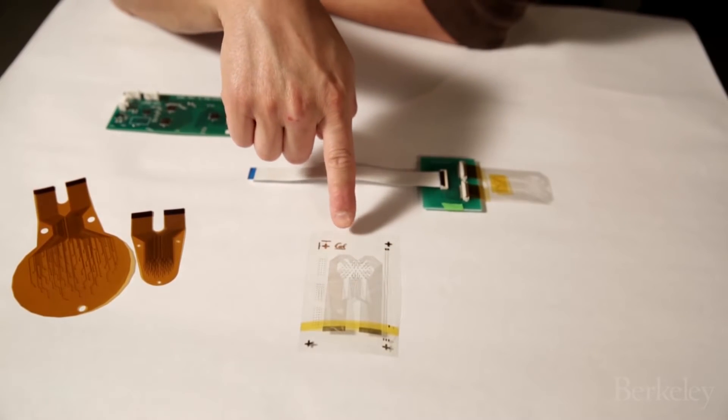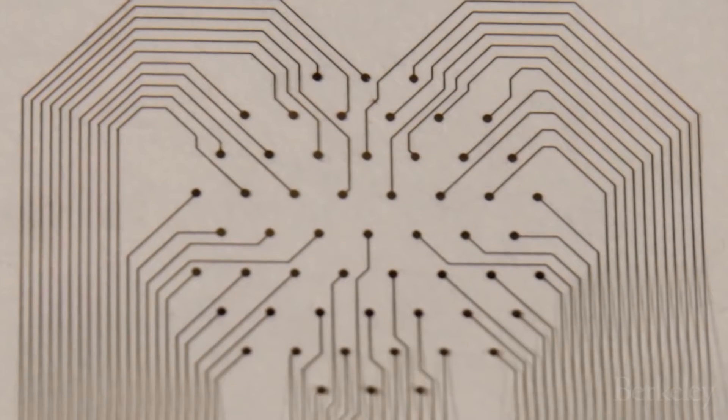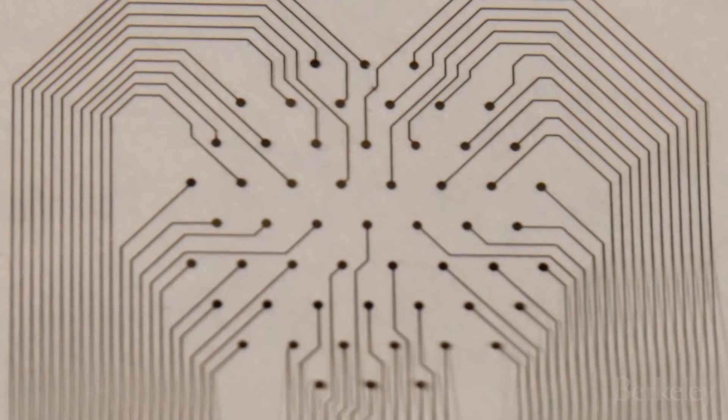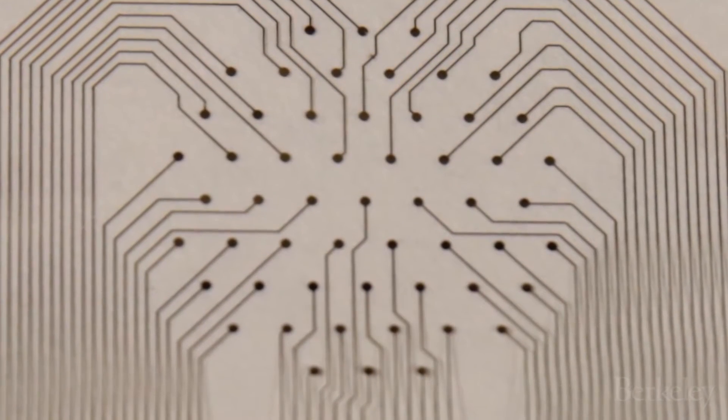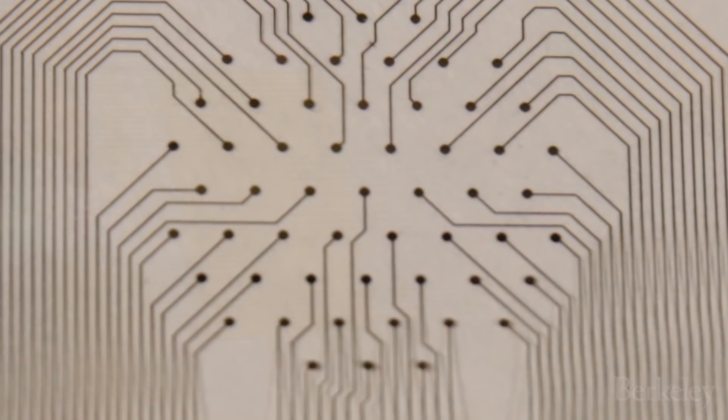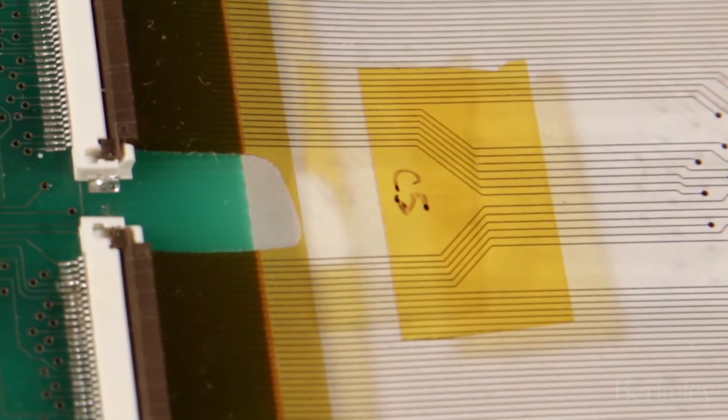This is the electrode array that would go on your skin and be part of the bandage. So what you see here is a bunch of little electrodes. Those are the little dots that you see right in the middle, clustered. And you can see that from each of those electrodes, buried underneath are little wires that extend back out to a connector.